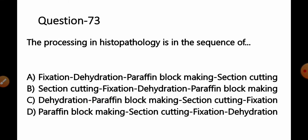Question number 73: The processing in histopathology is in sequence of — Option A: fixation, dehydration, paraffin block making, section cutting; B: section cutting, fixation, dehydration, paraffin block making; C: dehydration, paraffin block making, section cutting, fixation; D: paraffin block making, section cutting, fixation, dehydration.